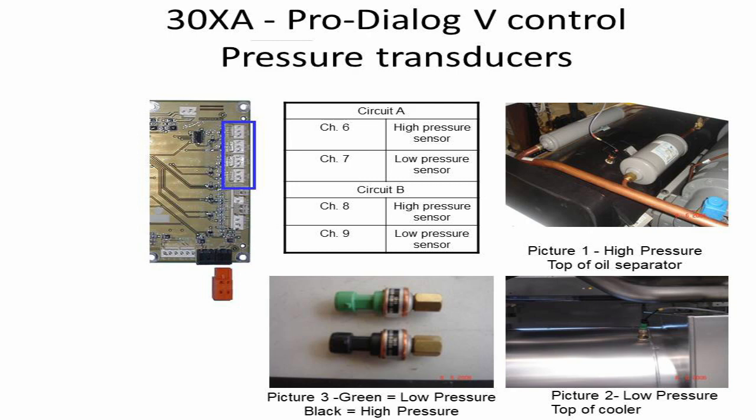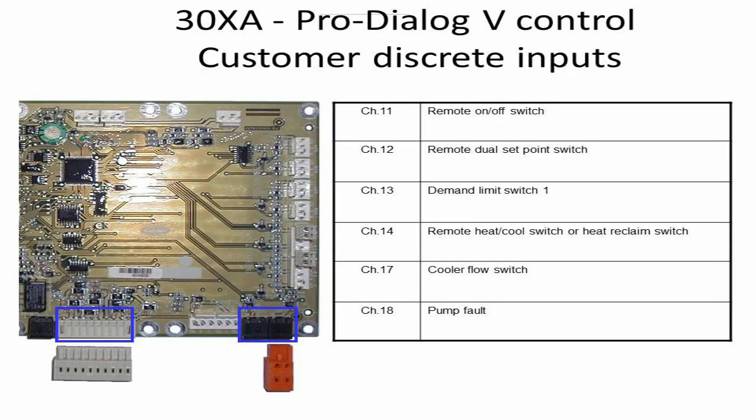The high pressure transducer and low pressure transducer for Circuit B are connected on Channels 8 and 9. Picture 1 shows the physical location of the HP transducer installed in the chiller. Picture 2 shows the physical location of the LP transducer installed in the chiller. Picture 3 shows the colors of the transducers. This slide shows the connection locations on the main baseboard along with a table of input signals and their names with respective connection channels on the baseboard.